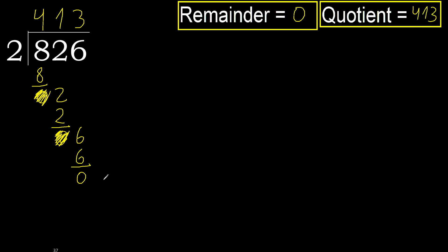Ok, remainder is 0, therefore 826 divided by 2 is 413.